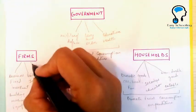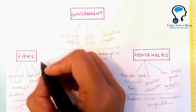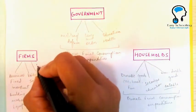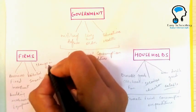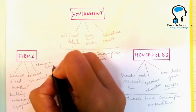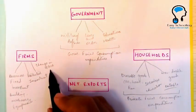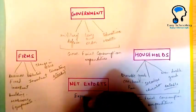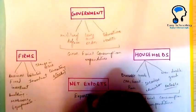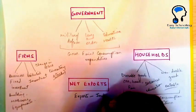The third type of investment is change in stock. The stock that firms hold is also considered an investment. Together, these three form gross domestic capital formation.